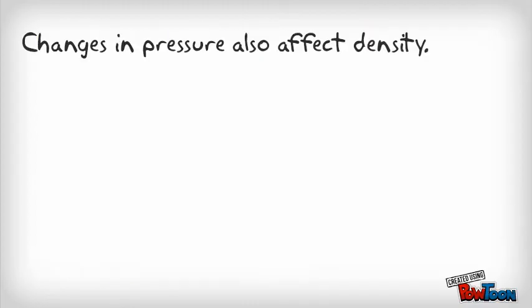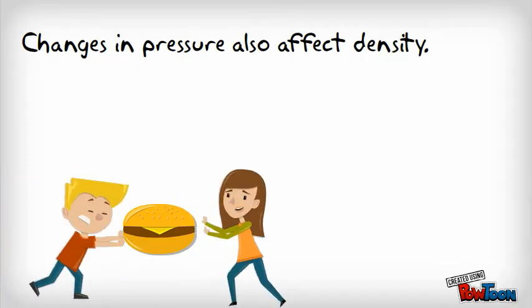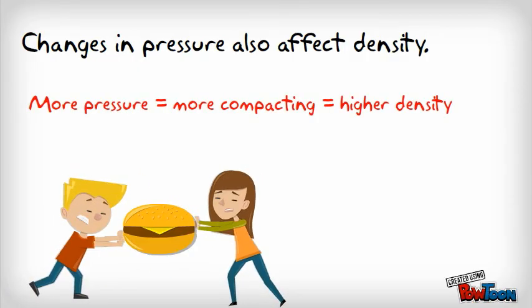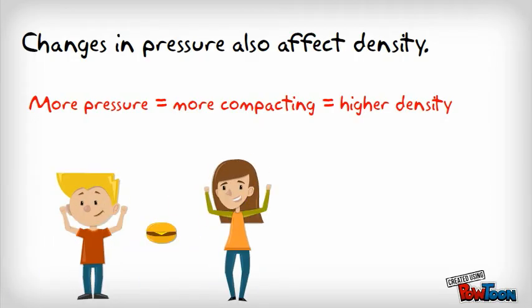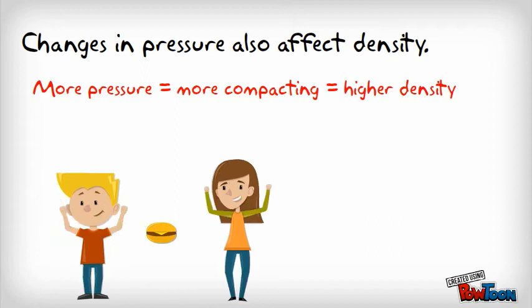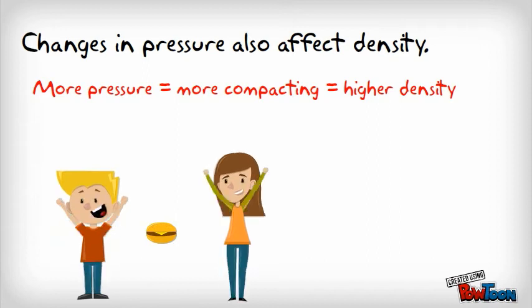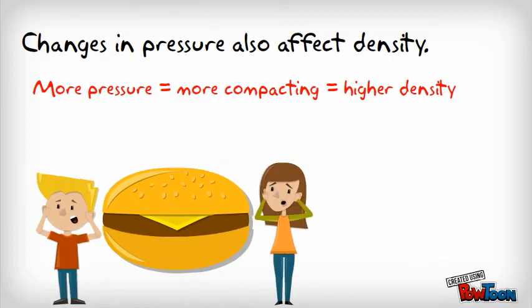Changing the amount of pressure acting on an object also impacts its density. Pressure is a squeezing force. If you put more pressure on something, you're squeezing its molecules closer to each other. You're compacting them, so the density will increase. If you lower the pressure on an object, the molecules will be able to expand and spread apart, so the object becomes less dense.